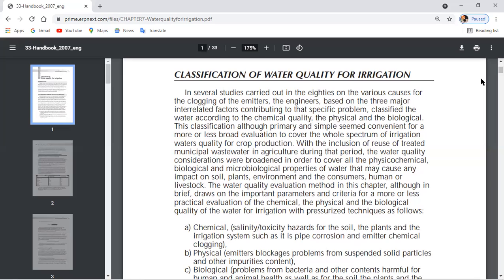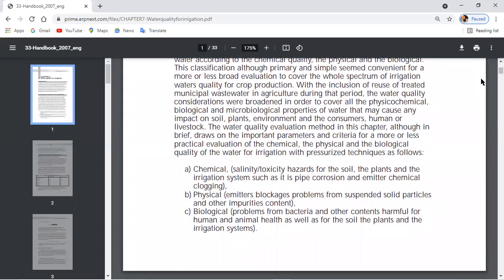In chemical quality, it comes to salinity, salt content - how much saline is the water. Toxicity - how much heavy metals are present which become toxic to the plant as well as the soil, the irrigation system, causing pipe corrosion. And emitter chemical clogging - the water is not able to come out in a proper manner.